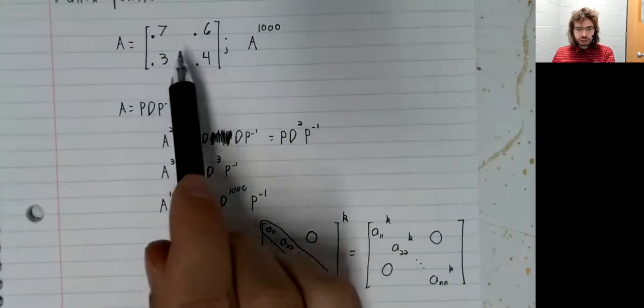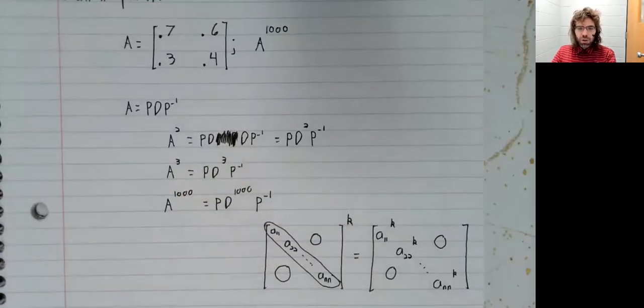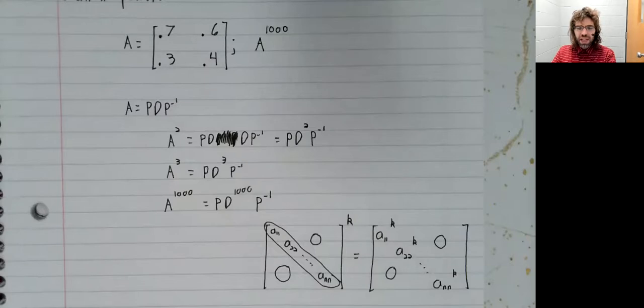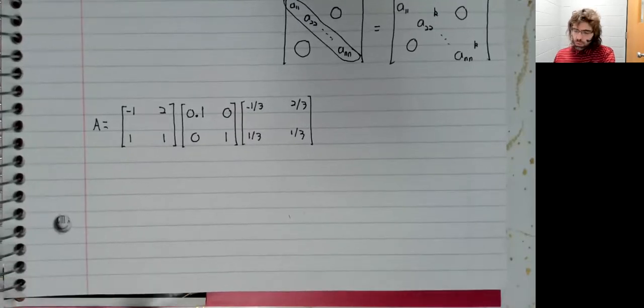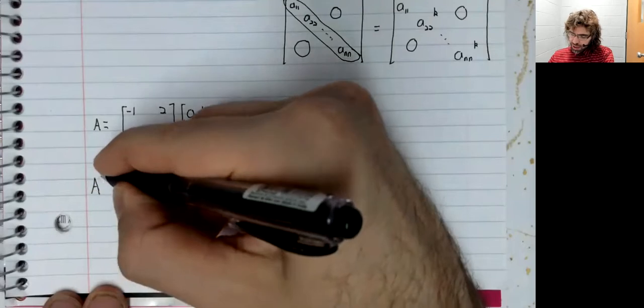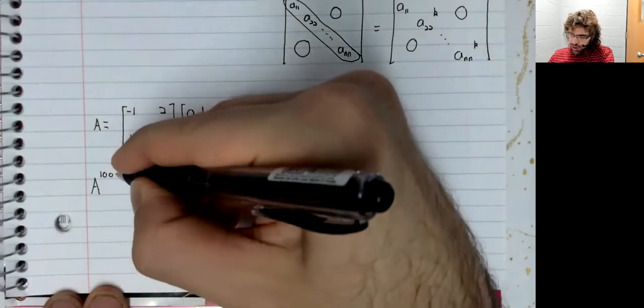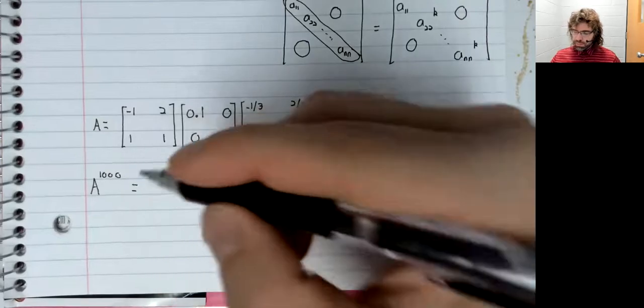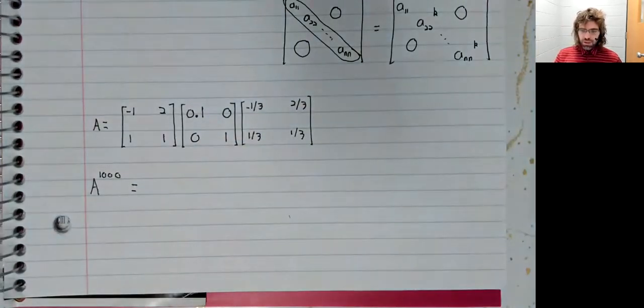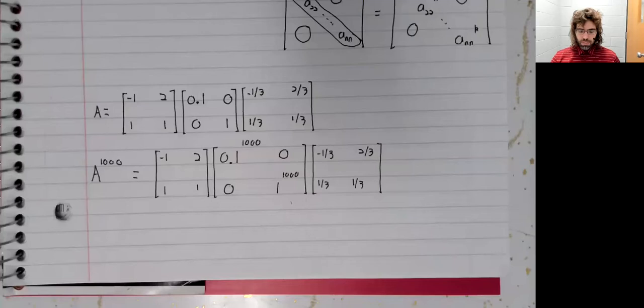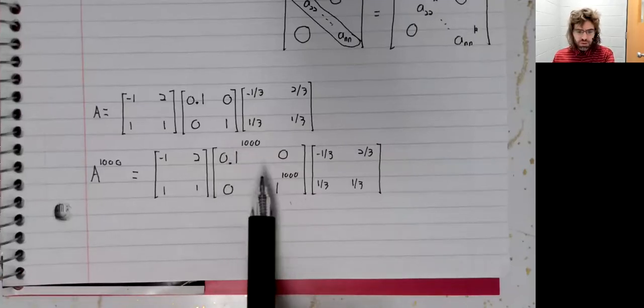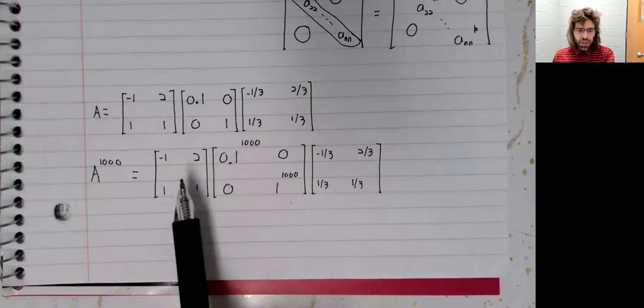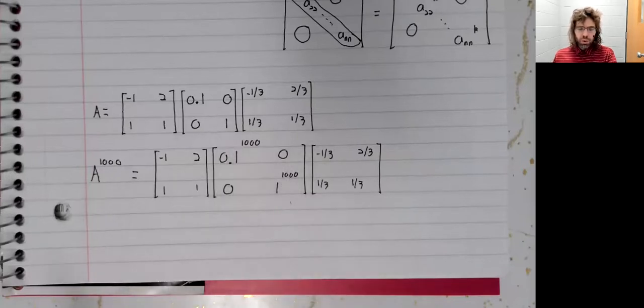So let's try this again. But now suppose that we've diagonalized A. Now, raising A to a power is nothing more than raising a few real numbers to powers and doing a little matrix multiplication.